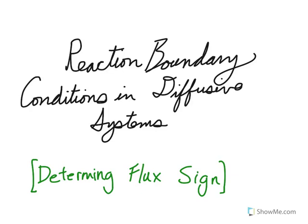It's always frustrating when you're working on a problem and you have all the concepts on the paper, but you just end up flipping a sign or putting the wrong sign in for some reaction term, and then the error ends up propagating through the rest of your problem. So today we're going to look at picking the right sign for a reaction term that's happening at a boundary in your system, specifically in cases where diffusion is happening.